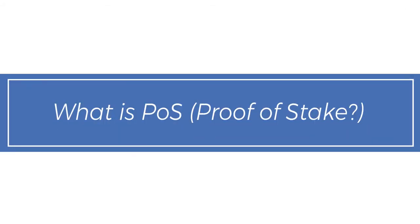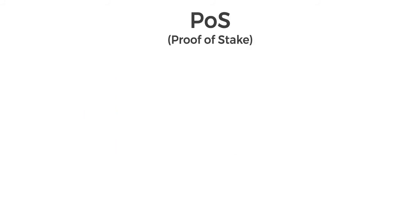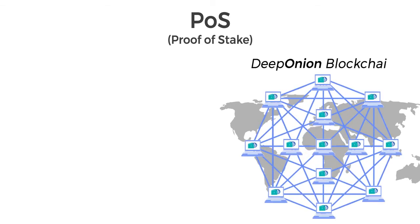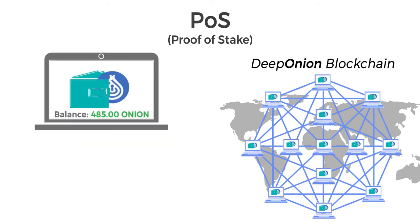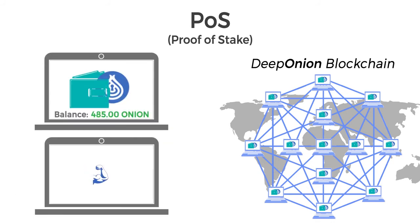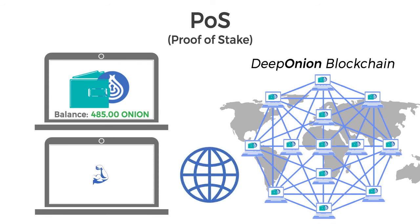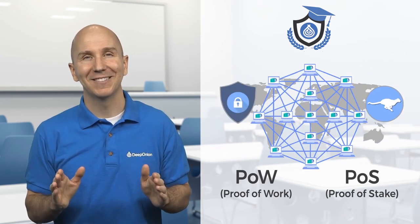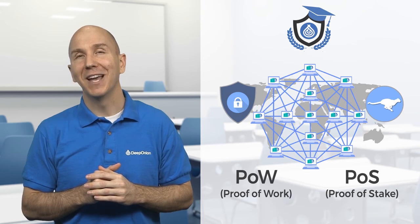What is POS or proof of stake? Proof of stake is a method that verifies and secures transactions on the DeepOnion blockchain, just like proof of work, but with a few differences. To verify transactions, you need to have Onion in your wallet and a small amount of computing power with an internet connection. Thanks to this proof of stake system, people who have Onion and want more can earn extra Onion from the network. Proof of work and proof of stake are helping the DeepOnion blockchain to be more secure and fast, and these two topics will be covered in more detail in another video.